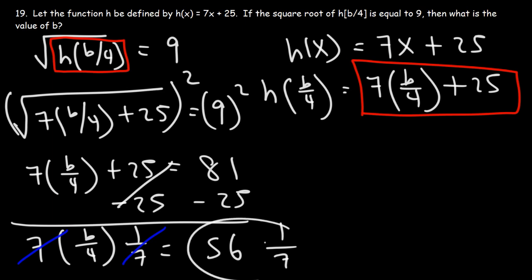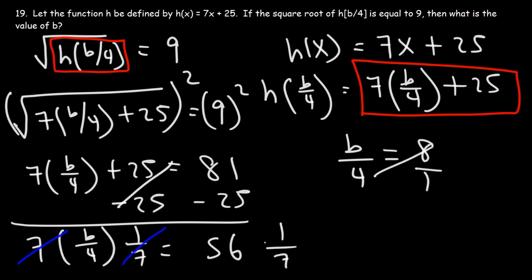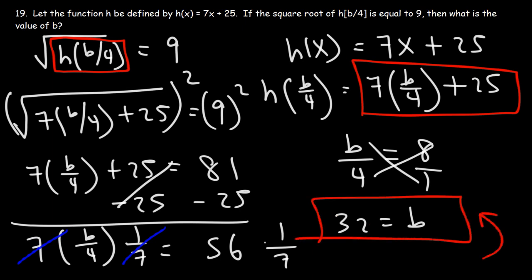56 divided by 7 is 8. So b over 4 is equal to 8. Now let's cross multiply — 4 times 8 is 32, and that equals 1 times b, which is b. So the answer is b is equal to 32. And that's it for this problem.